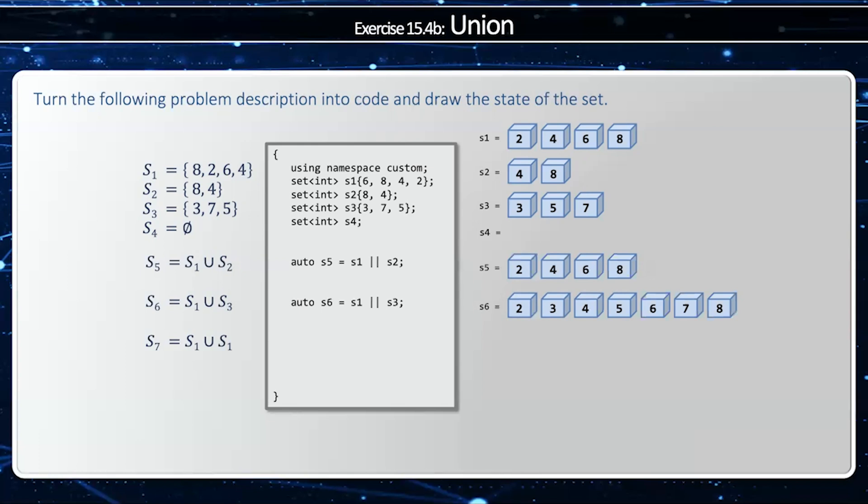If I say S7 equals S1 union S1, in other words, union of myself, that'll just give me myself. And finally, if I say S8 equals S1 union the empty set, that's just going to be myself also.